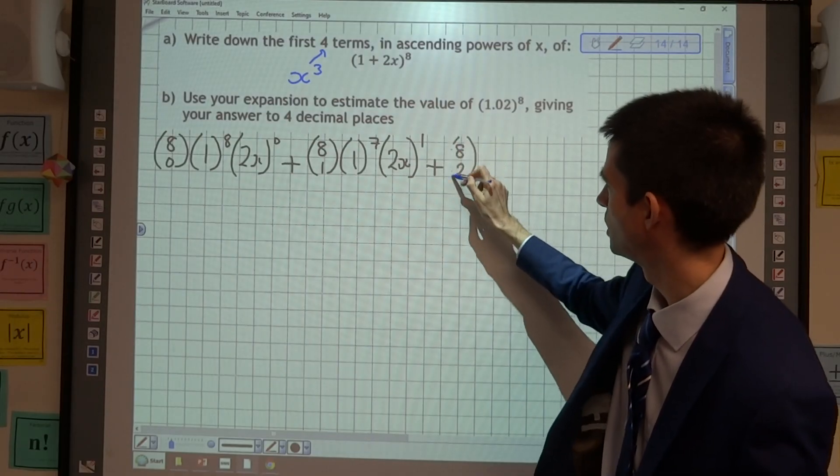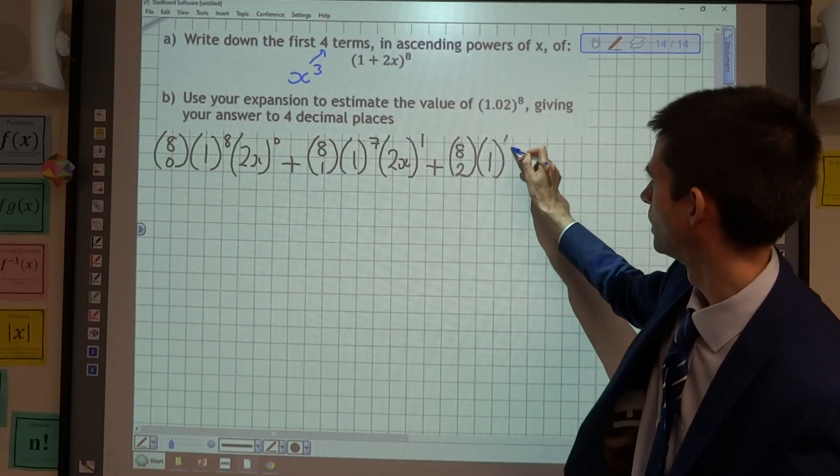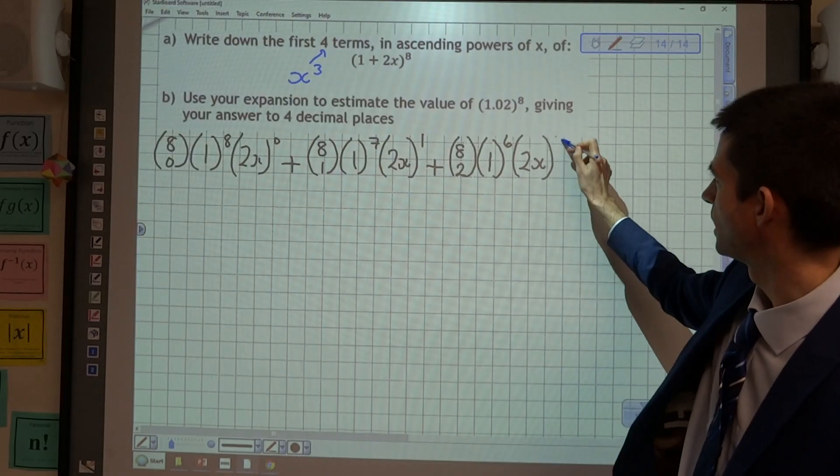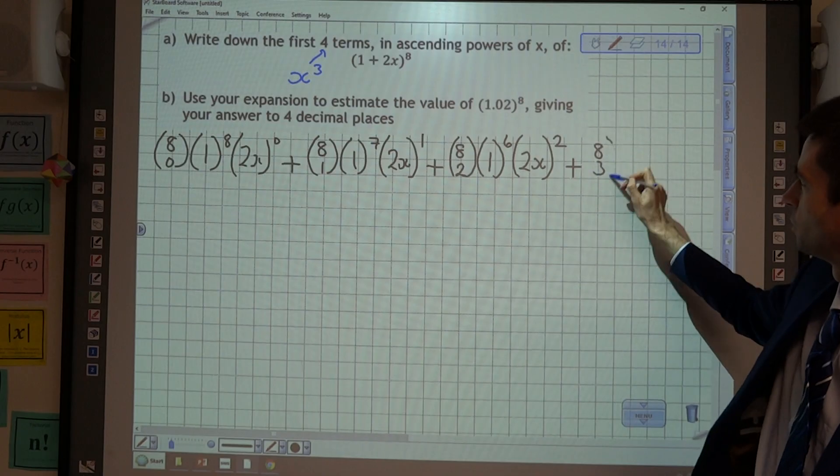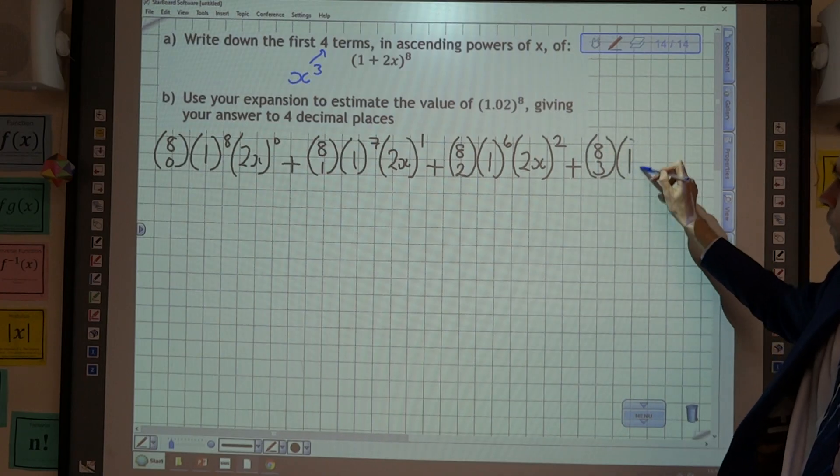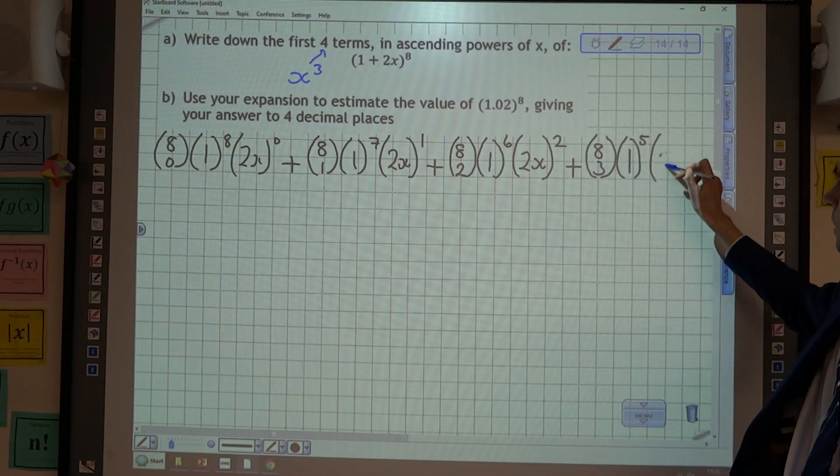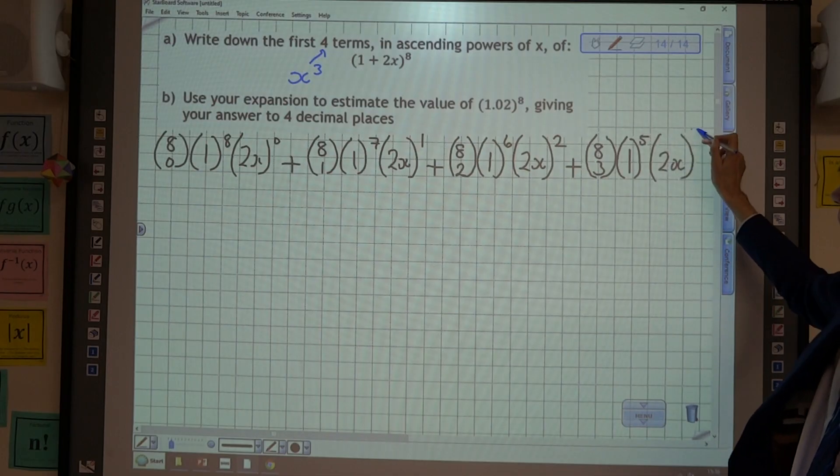Then 8 choose 2, 1^6, (2x)^2. And 8 choose 3, 1^5, (2x)^3.